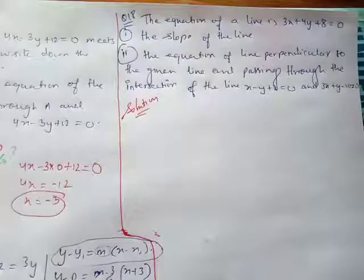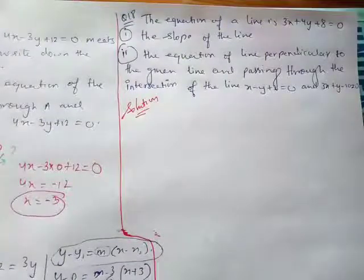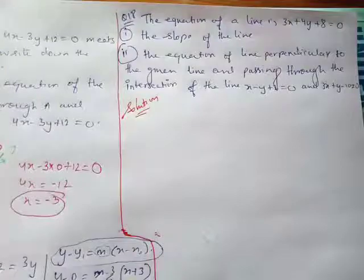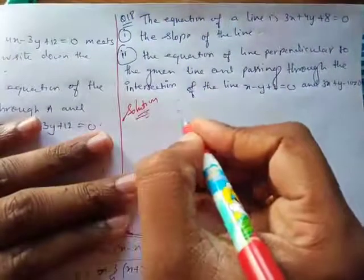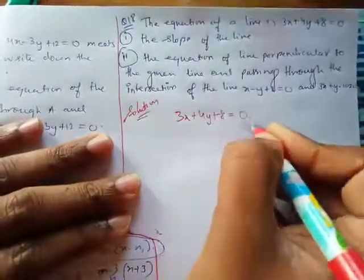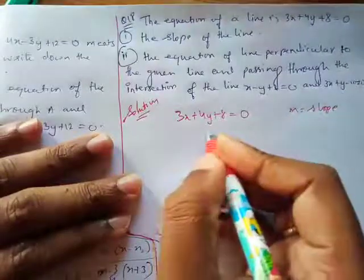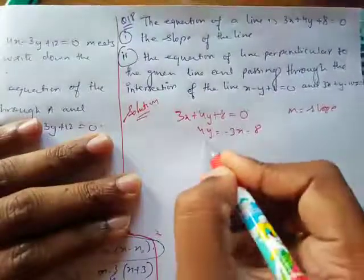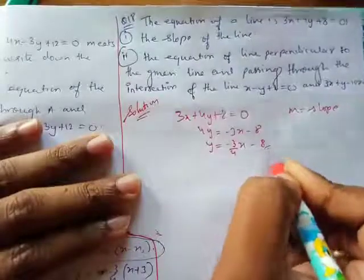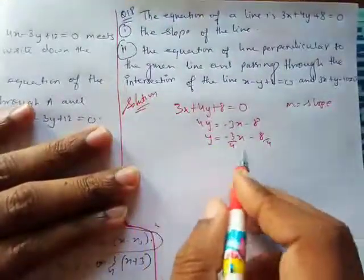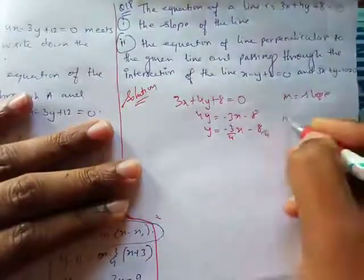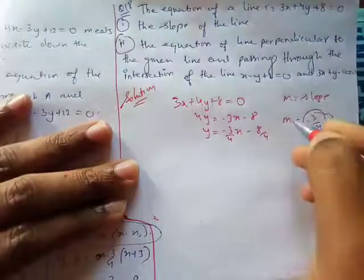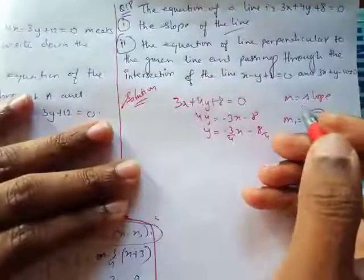Now question number 18. The equation of a line is 3x + 4y + 8 = 0. I have to find the slope of this line. Rearranging: 4y = -3x - 8, so y = (-3/4)x - 2. Therefore m = -3/4. The slope is -3/4 and the first part is done.